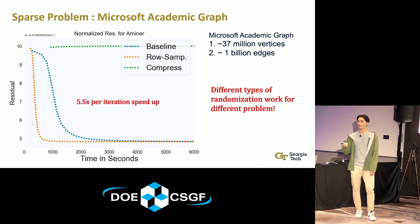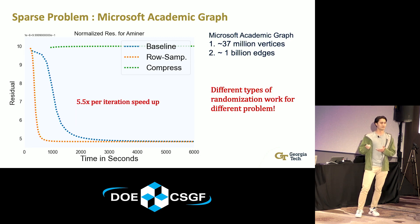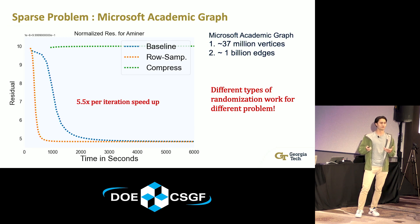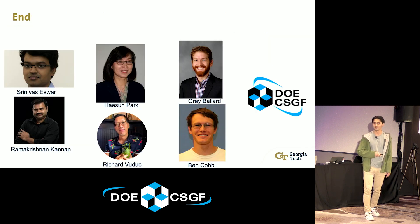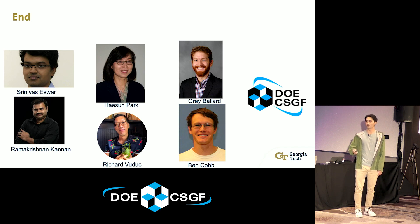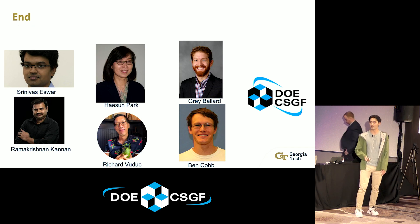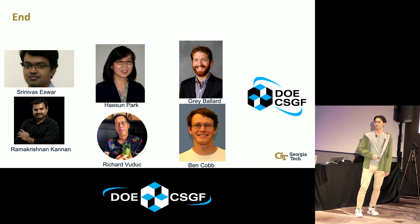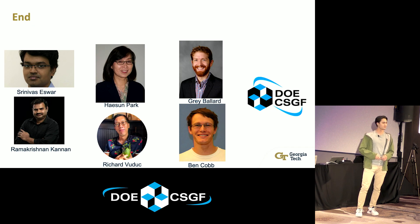The takeaway is that in randomized numerical linear algebra we're exploring what types of randomization work for what types of problems. It's pretty clear from these examples that we need different types of randomization and different types of sampling to solve different problems. I want to thank my collaborators — Srinivas from Argonne, Ramke from Oak Ridge National Lab, my advisors Haysun and Rich, and my other collaborators — and especially the DOE CSGF for the support over the years and all the great memories.